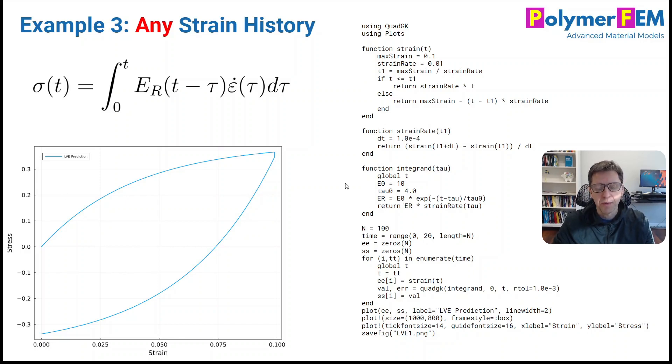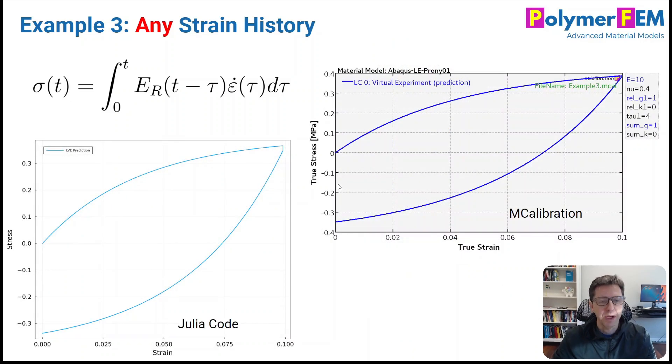I can, of course, compare this to mCalibration, which is what I typically use for these things. In mCalibration, you can implement this example very easily. You just set a linear elastic plus a proni series with one term. And these are the values that I put in, and you get pretty much the same answer. So that shows how you can solve something like this in a pretty quick and dirty way, and how you can do it in mCalibration.